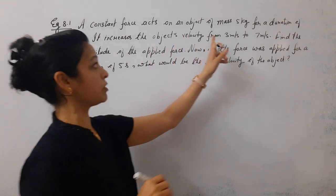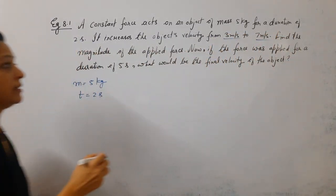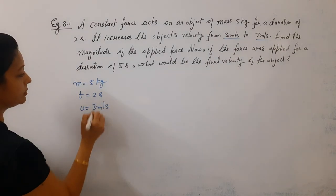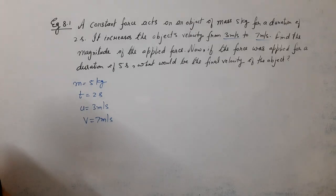It increases the object's velocity from 3 m per second to 7 m per second. So initially the velocity was 3 m per second and after 2 seconds the velocity became 7 m per second.